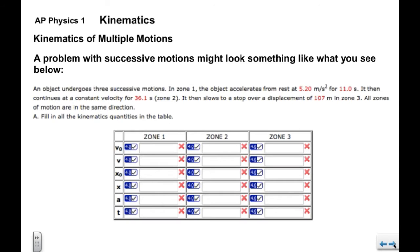A problem of this type might look something like this. We have an object that undergoes three successive motions. We're going to call them Zone 1, Zone 2, and Zone 3.